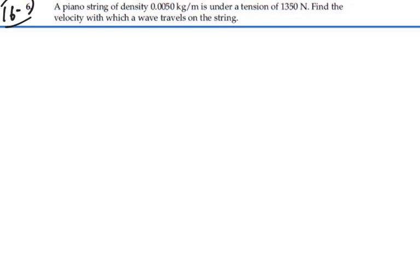Find the velocity with which a wave travels on the string. So we're given the linear mass density, which is the mass per length of the string, and that is 0.005 kilograms per meter. We're also given the tension, that is 1350 newtons.